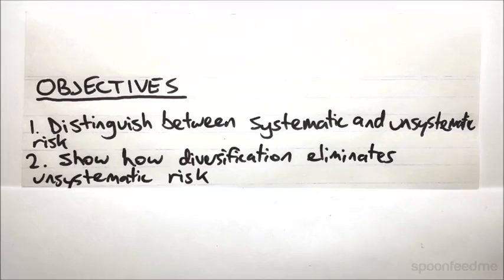The risk on an asset can be broken down into two components: the systematic risk and the unsystematic risk. We'll go over what these two are and then show how the unsystematic risk can actually be eliminated through diversification.